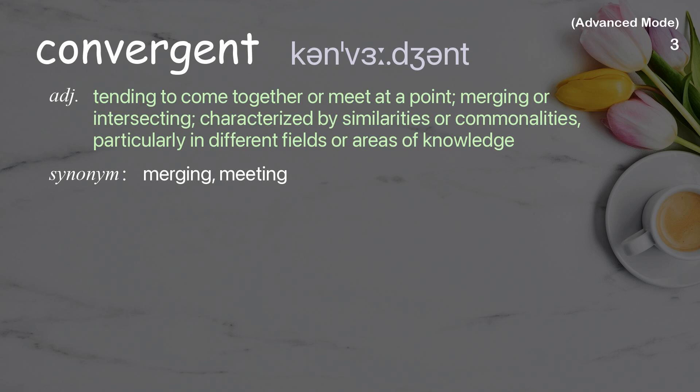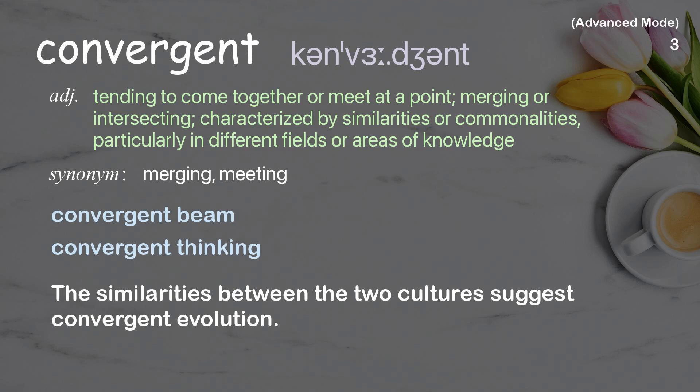Convergent: tending to come together or meet at a point; merging or intersecting; characterized by similarities or commonalities, particularly in different fields or areas of knowledge. Examples: convergent beam, convergent thinking. The similarities between the two cultures suggest convergent evolution.